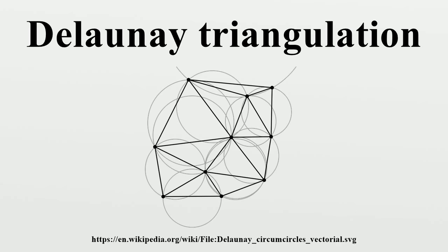For a set of points on the same line, there is no Delaunay triangulation. For four or more points on the same circle, the Delaunay triangulation is not unique. Each of the two possible triangulations that split the quadrangle into two triangles satisfies the Delaunay condition — i.e., the requirement that the circumcircles of all triangles have empty interiors.